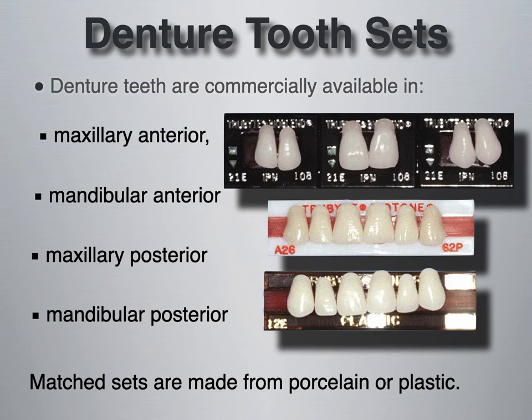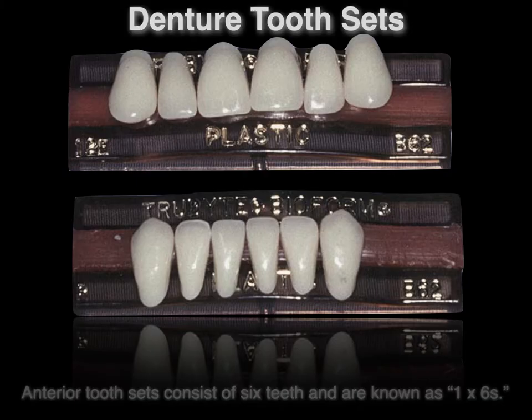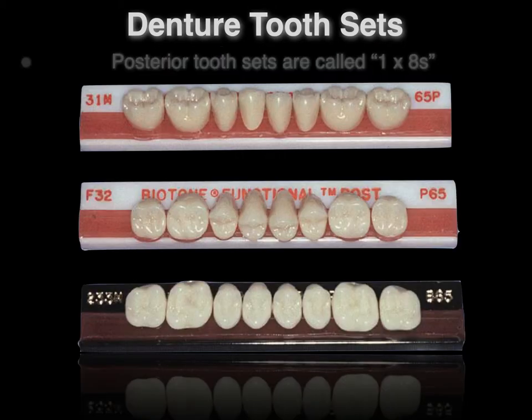More commonly, we're able to purchase our teeth in four main cards. You have your 1x6's — those are your anterior six teeth. As you see in the photo, we have our maxillary six anterior teeth on top and then the mandibular six anterior teeth on the mandibular card.